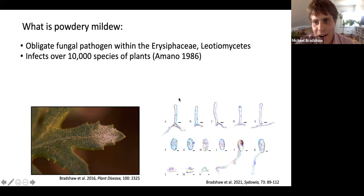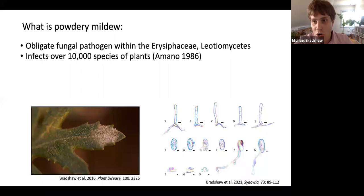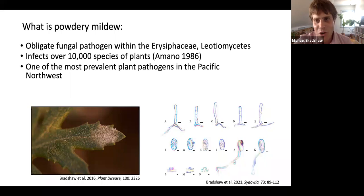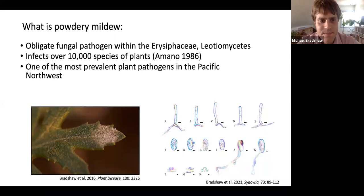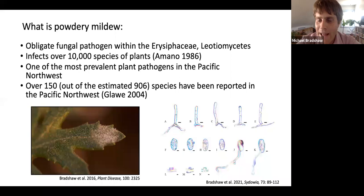Powdery mildew is everywhere. It infects over 10,000 species of plants. It strictly infects angiosperm hosts, and it's one of the most prevalent plant pathogens in the Pacific Northwest. Since I've been here, I've noticed it almost everywhere. If you walk outside the herbarium, you'll see powdery mildew on Baptisia, on Hamamelis, on lilacs. In the Pacific Northwest alone, there are estimated to be over 150 powdery mildew species of the 906 species reported worldwide. The Pacific Northwest has a perfect climate — wet spring for germination of asexual spores and dry summer for spore dispersal.